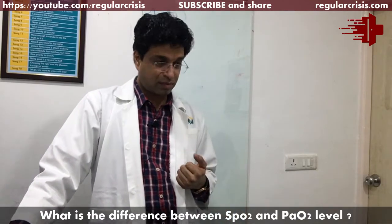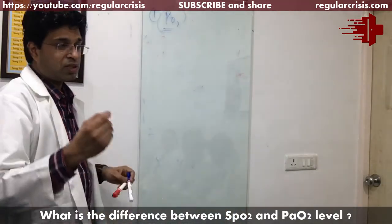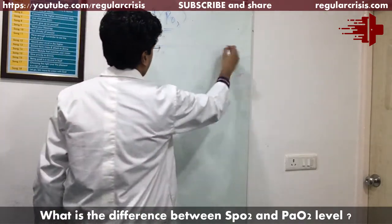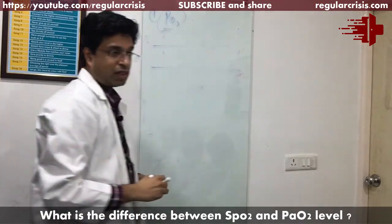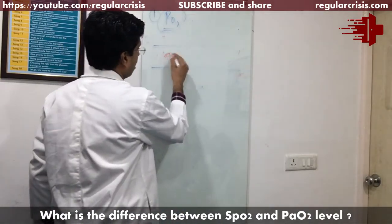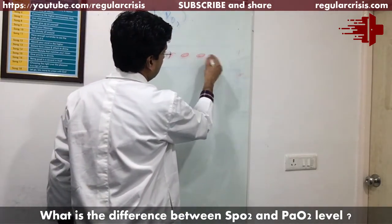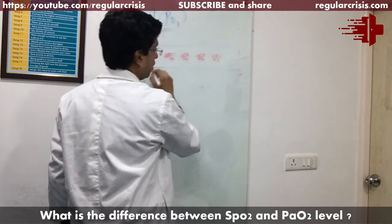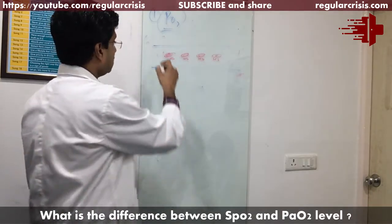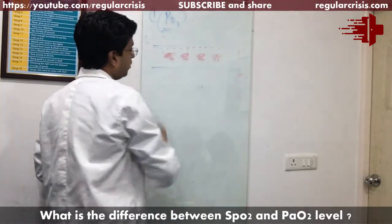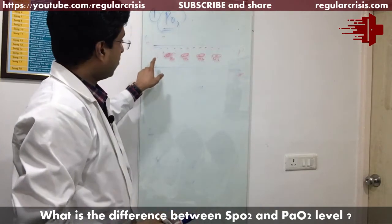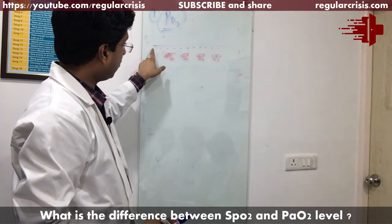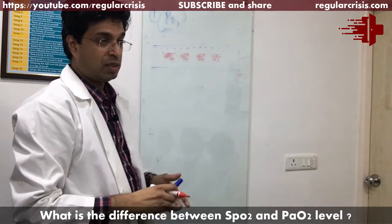The term saturation — oxygen travels in the blood vessel in two forms. One is via RBCs in which hemoglobin is there, and another one is the dissolved PO2. So one way oxygen travels is by binding to hemoglobin, and another form is oxygen dissolved in the plasma.